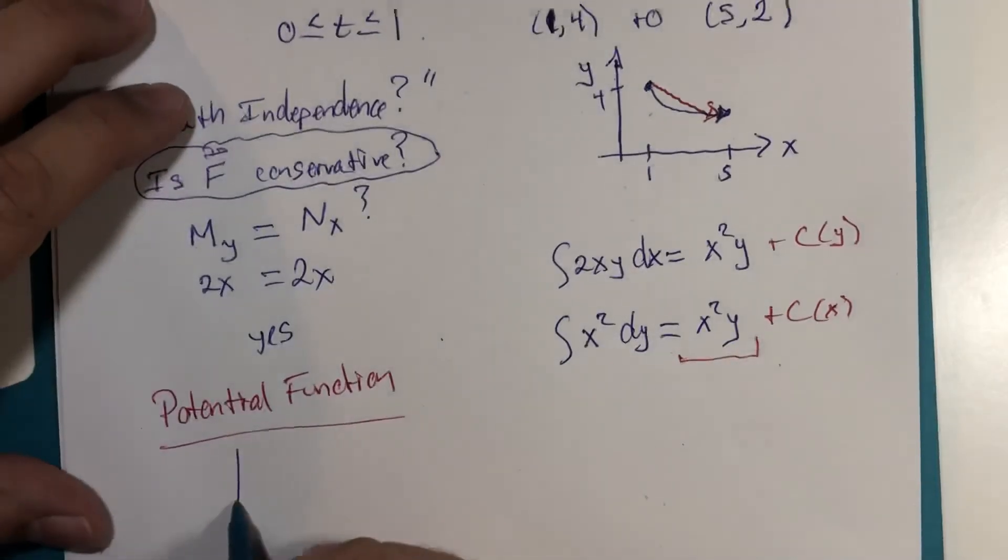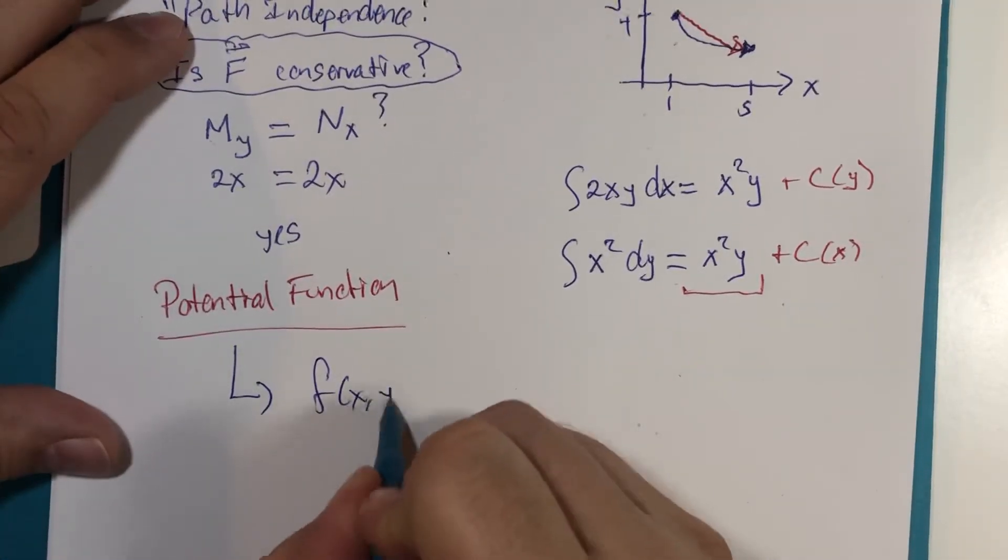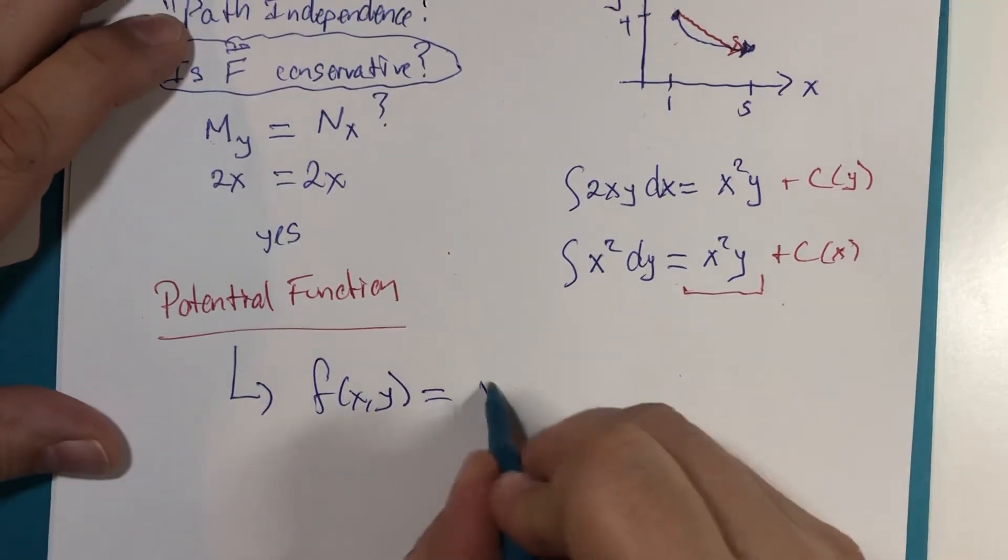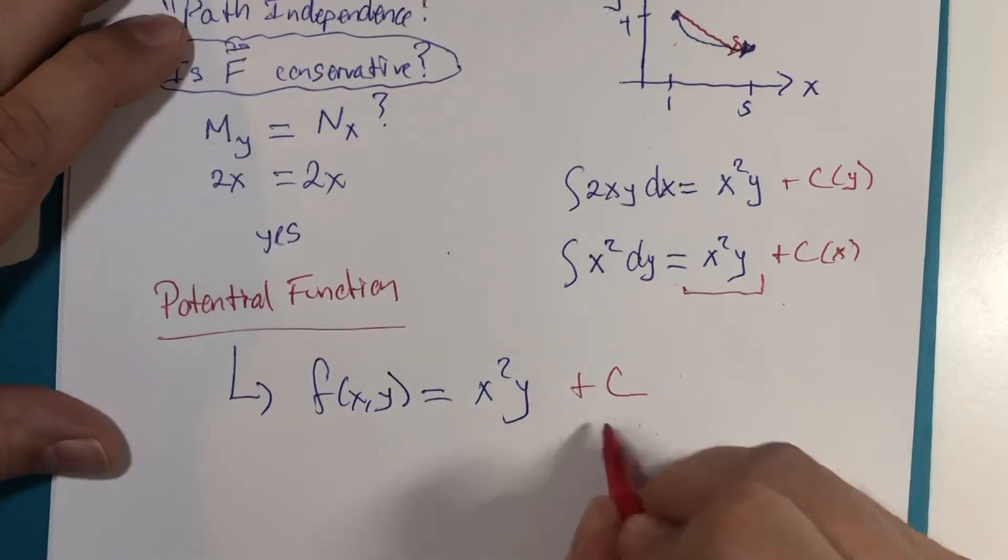So, that potential function, f of xy, is x squared y, and then it could have a numerical constant.